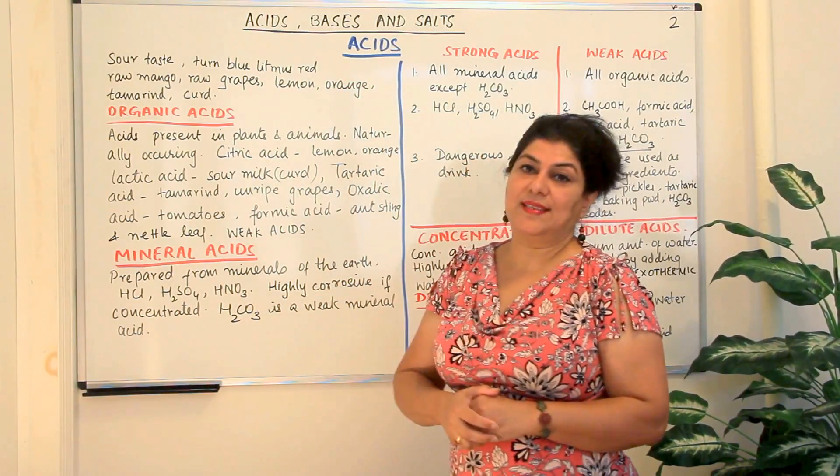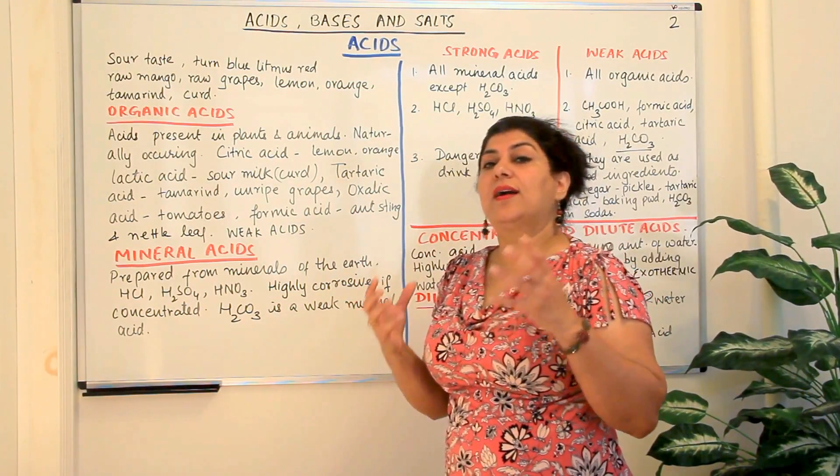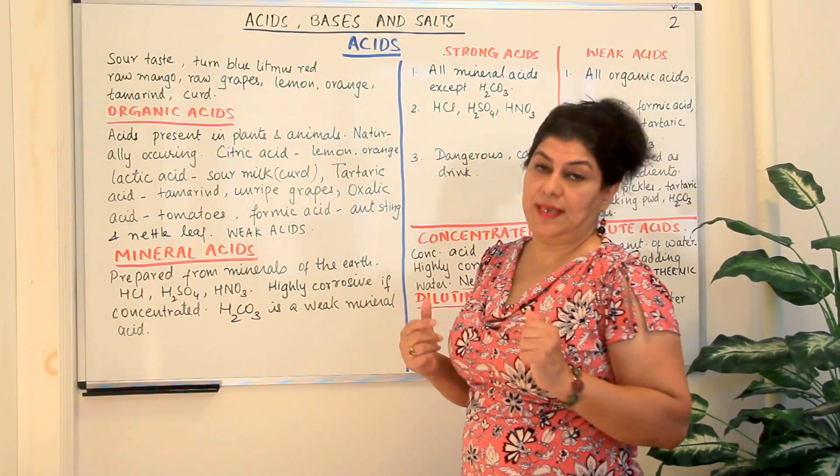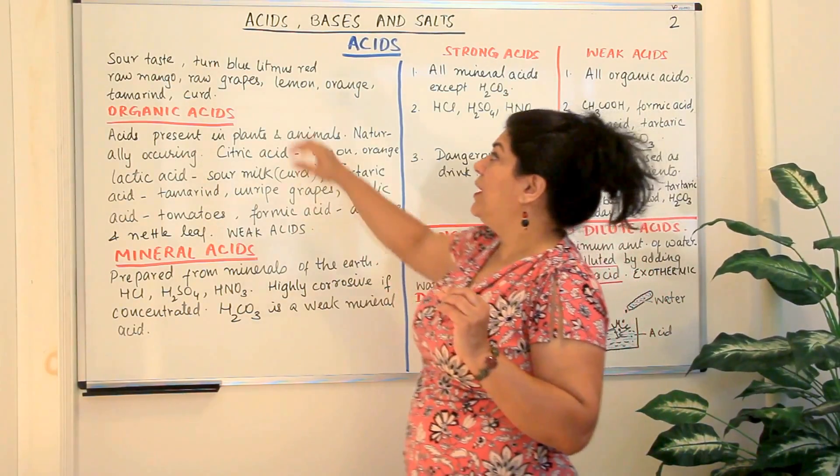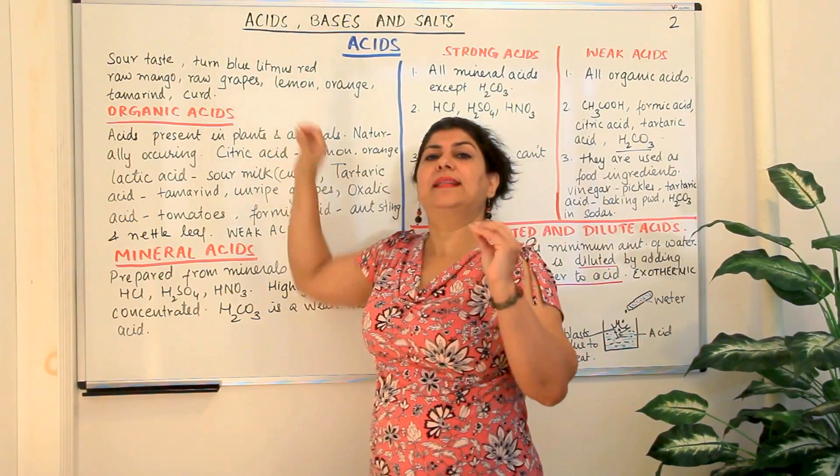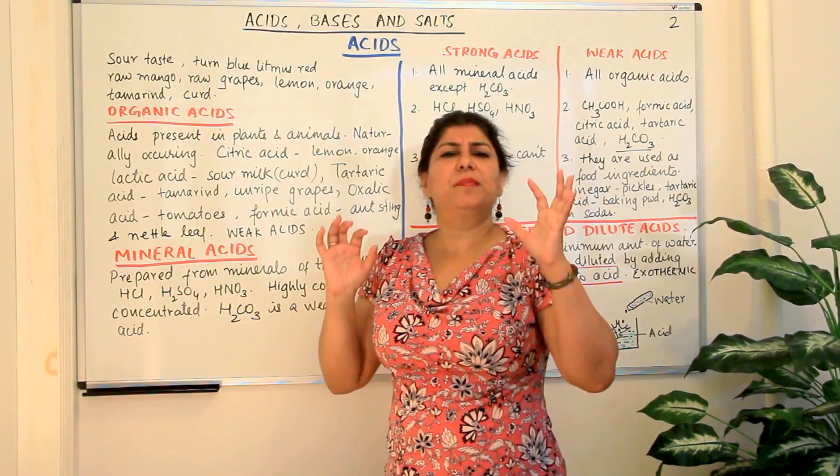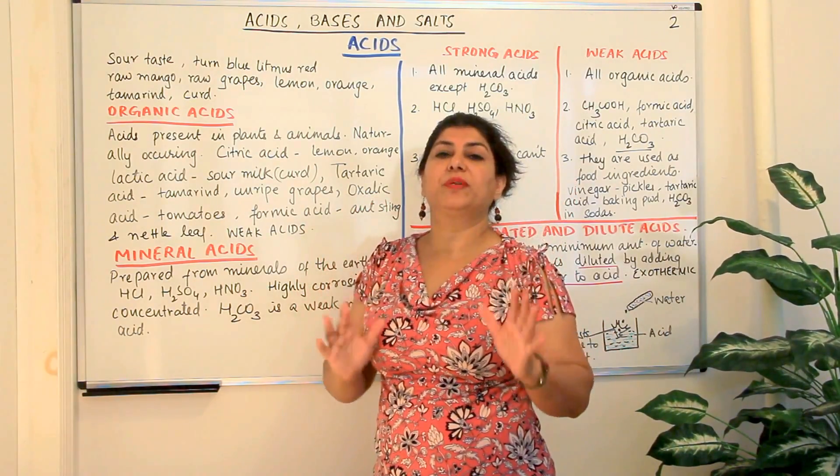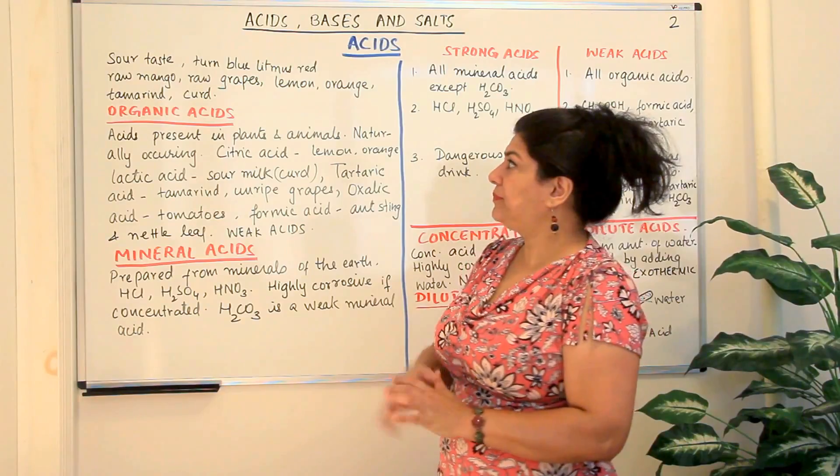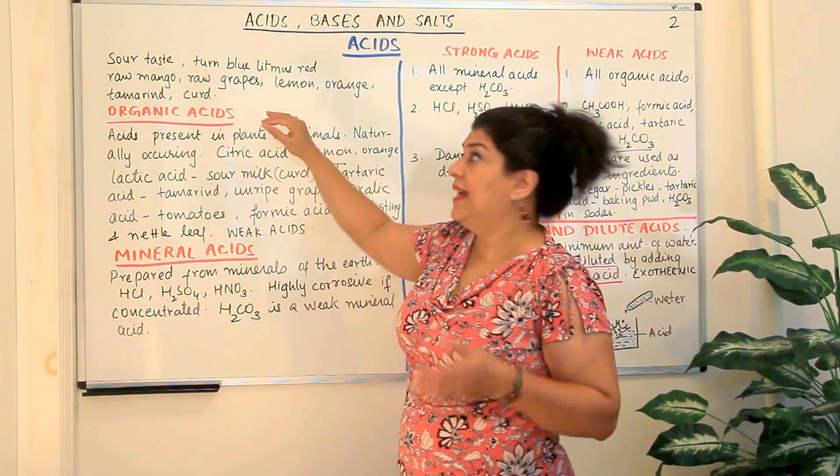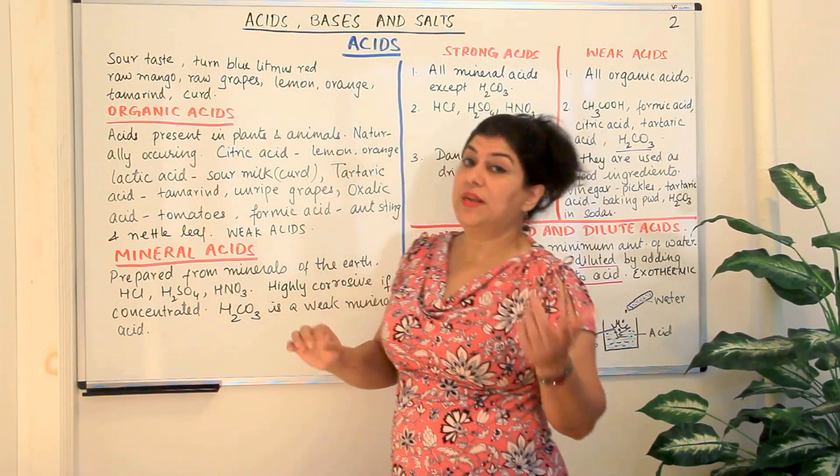So let us talk about acids. Acids are substances which are sour in taste. Their taste is sour and we also study that they turn blue litmus red. This is the most characteristic property of acids. That they are sour in taste and that they turn blue litmus red.